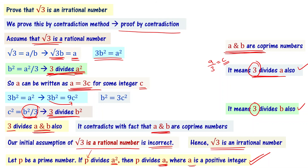Therefore we can say root 3 is an irrational number. This is how we prove using proof by contradiction method — we start by assuming root 3 is rational, reach a contradiction with the co-prime numbers definition, and conclude that root 3 is an irrational number.